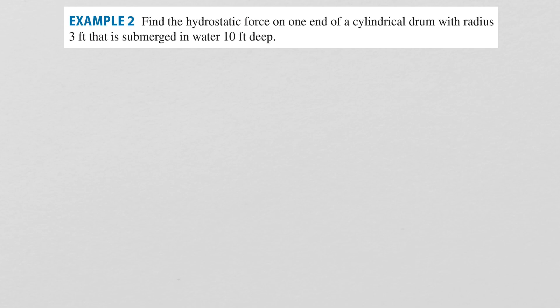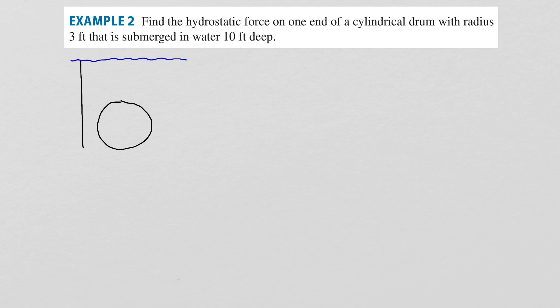In the second example, we wish to find the hydrostatic force on one end of a cylindrical drum with radius 3 feet that is submerged in water 10 feet deep, meaning the bottom of the circle is at 10 feet. We have a circular piece — the end of the cylindrical drum — with the water surface above it. To make the circle's equation easier to work with, I'm going to place zero at the center of the circle.